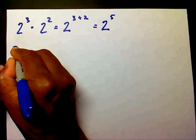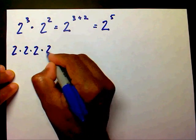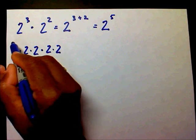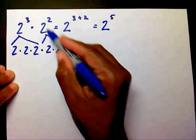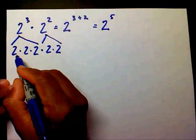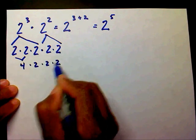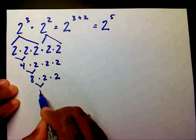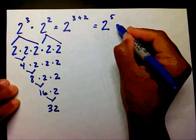2 to the third power really means 2 times 2 times 2, and 2 to the second really means you have 2 twos — so altogether you have five 2's multiplied together. Let's break this down: 2 times 2 is 4, 4 times 2 is 8, 8 times 2 is 16, 16 times 2 is 32. So therefore, 2 to the fifth power equals 32.